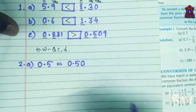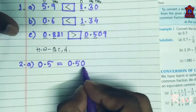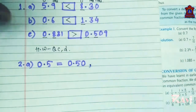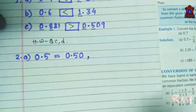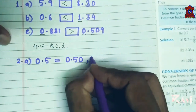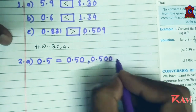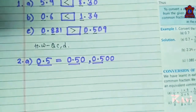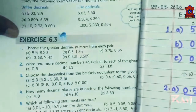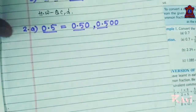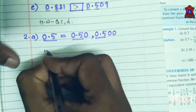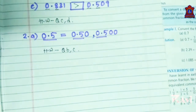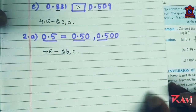0.5 is equal to 0.50 — the added zero has no value, so it is equal to 0.5. One more: 0.500. So 0.5, 0.50, and 0.500 are all equal. Questions B and C you can practice by yourself.